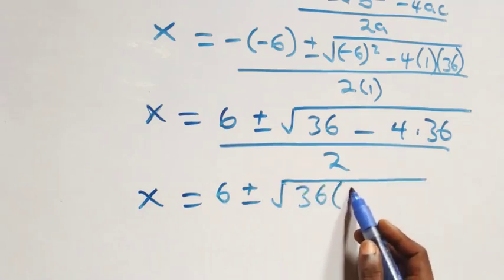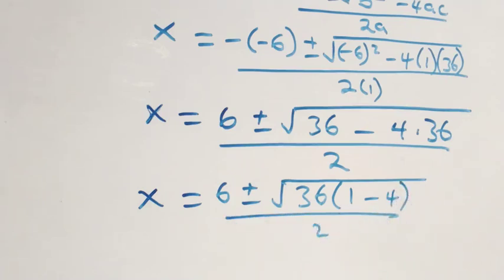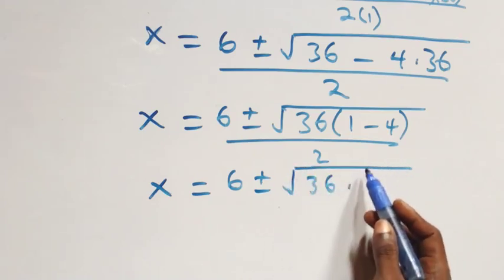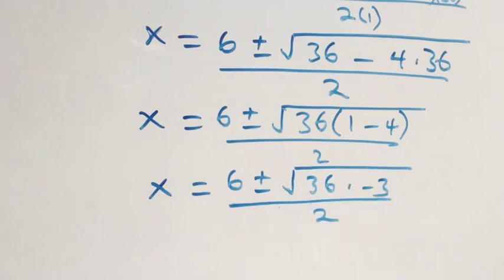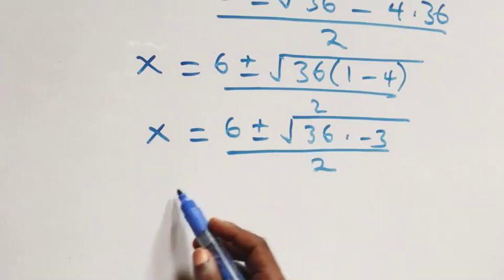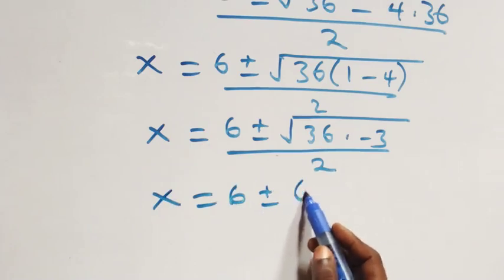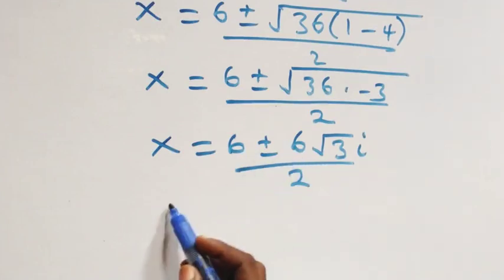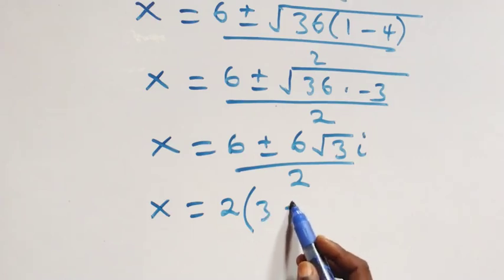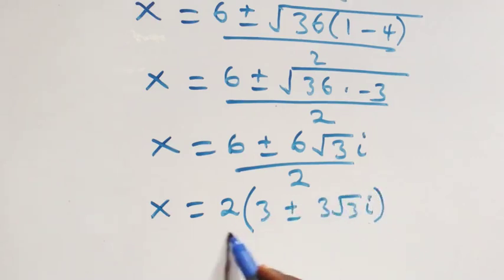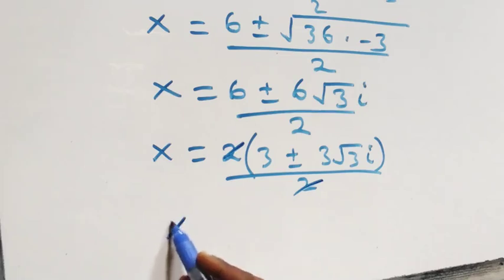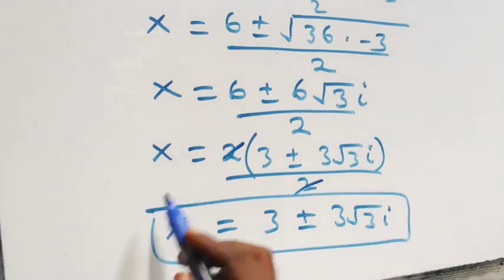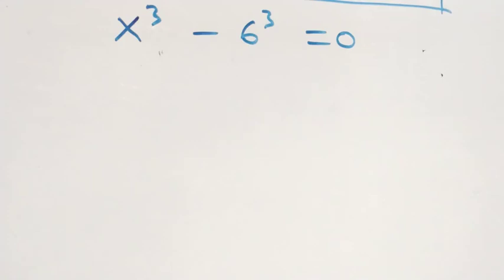Factoring 36 out under the radical gives x = (6 ± √(36(1 - 4))) / 2 = (6 ± √(36 × -3)) / 2. Separating the root, √36 = 6, so x = (6 ± 6√(-3)) / 2 = (6 ± 6√3 i) / 2. Canceling the factor of 2, x = 3 ± 3√3 i. These are two complex solutions.